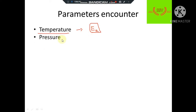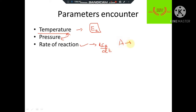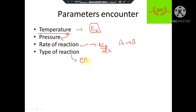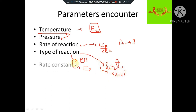First is temperature, next is pressure, and these two are correlated with each other. Next is rate of reaction — the rate of reaction is given as dCa/dt, that is the conversion rate for A to B. Then type of reaction: we may have endothermic, exothermic, fast reaction, or slow reaction.